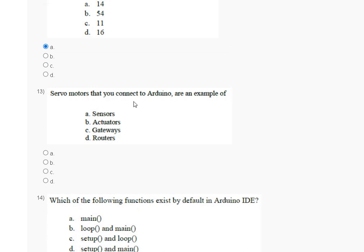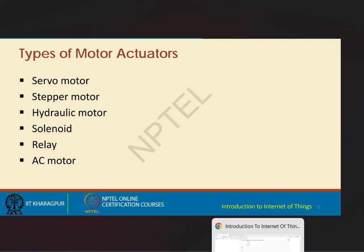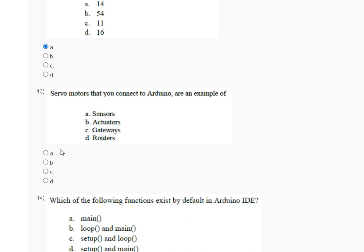Question number 13: servo motors that you connect to Arduino are an example of — first sensor, second actuator, third gateway, fourth router? The types of actuators include servo motor, stepper motor, hydraulic motor, solenoid relay, and AC motor. So the correct answer for question number 13 is option number B — actuator.